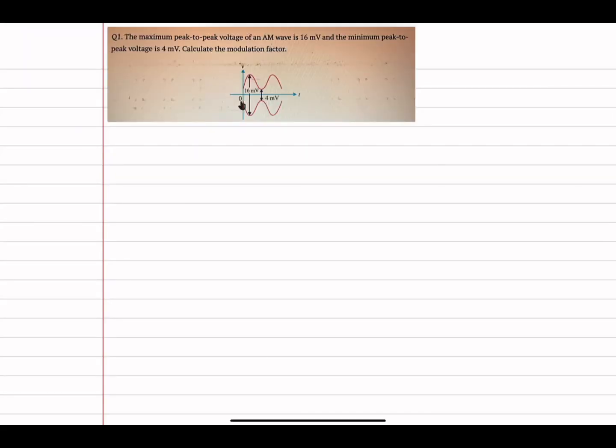Hello, welcome once again to this tutorial. We have been able to understand the process of modulation and demodulation. I would like us to solve one or two examples to strengthen our understanding. The first example: the maximum peak-to-peak voltage of an AM wave is 16 millivolts and the minimum peak-to-peak voltage is 4 millivolts. Calculate the modulation factor.